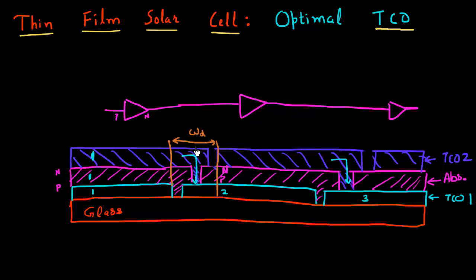This region is not contributing to any solar energy conversion — it's essentially not part of a cell. So this constitutes what is called the dead region in the cell, and its width is denoted by the symbol W_D.